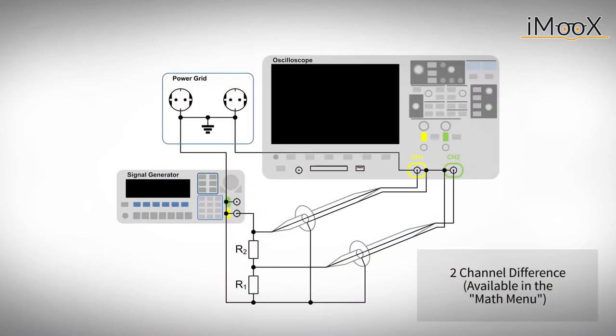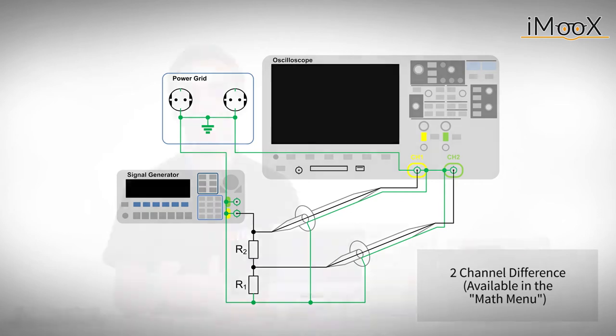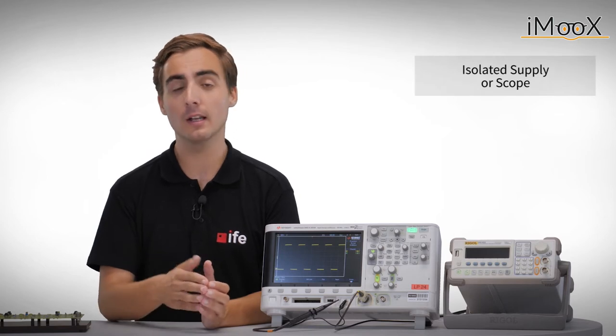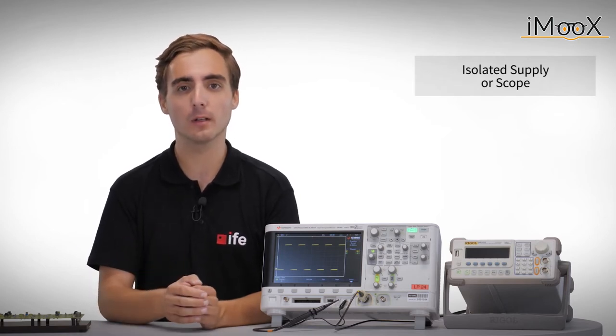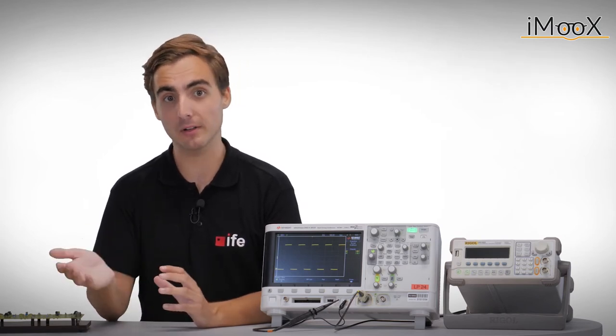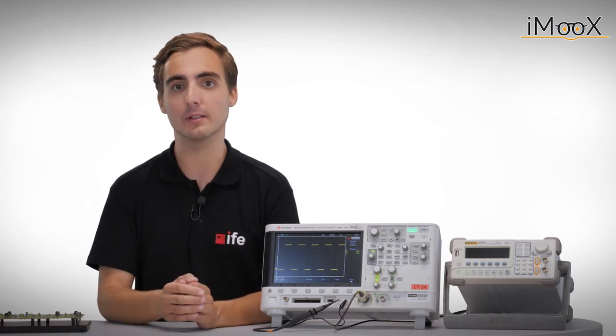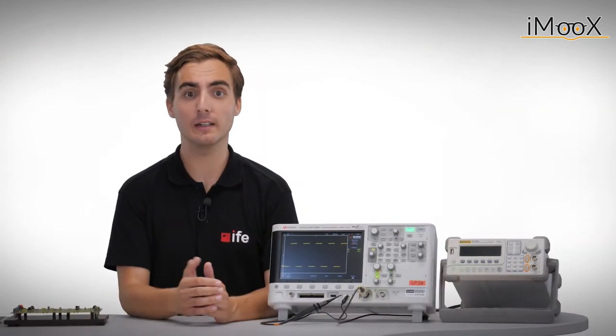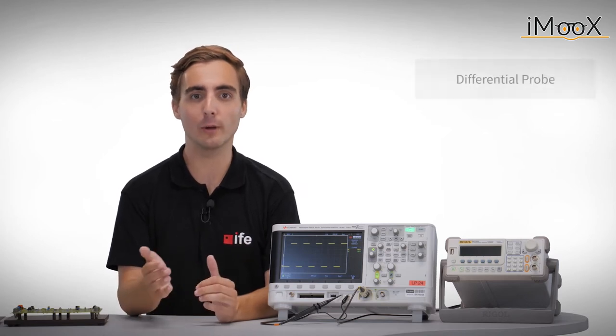In order to still be able to measure the voltage over R2, different approaches are possible. One possibility would be to use two channels, measuring the voltages with reference to ground, and subtracting one channel from the other. In order to do this, most scopes offer a math menu, where you can do a simple subtraction of the voltages. We will show an example for this function later in the video. Another possibility would be to isolate either the power supply or the scope by an isolation transformer, so that the grounds are not connected together. However, most scope manuals suggest to float the power supply and not the scope, as of accuracy reasons. Last but not least, as we have already mentioned before, also a differential probe could be used.